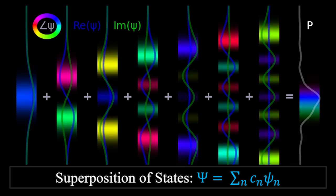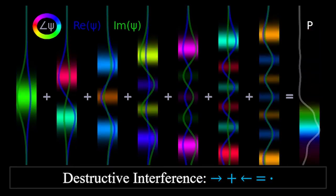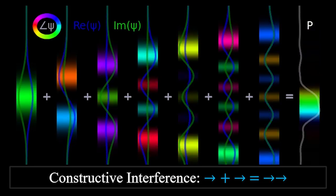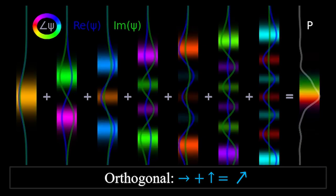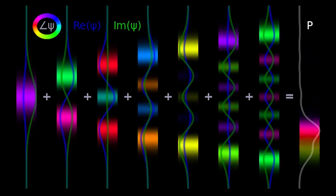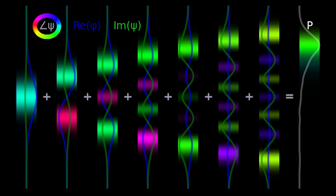For example, when you take a superposition of states, you're adding complex numbers. And so if the phases are different, you can get destructive interference. If the phases are the same, you get constructive interference. If the phases are orthogonal, you get kind of a little bit of both. And yeah, so that's what the colors represent. And in all of these columns, the color represents the phase of the wave function.